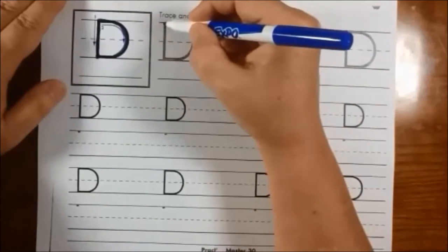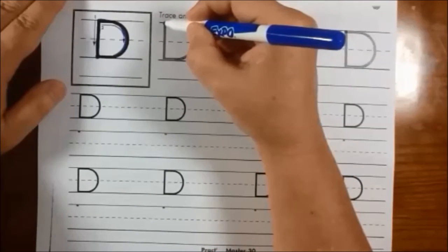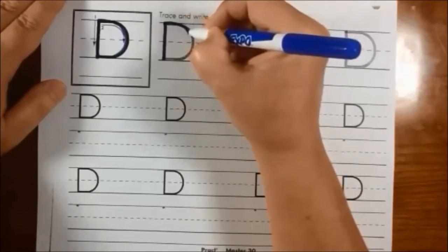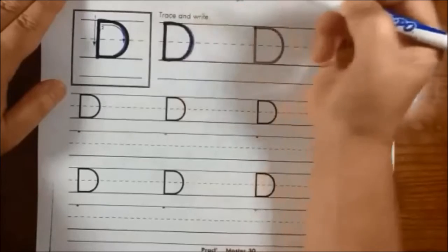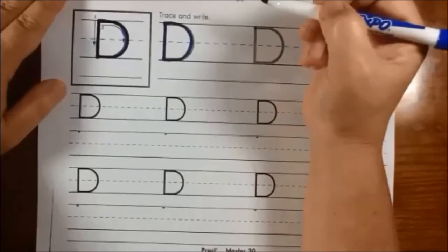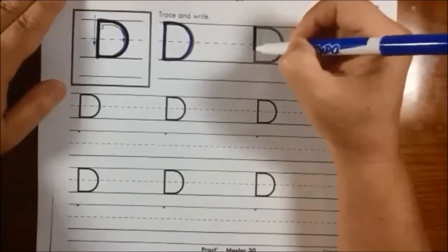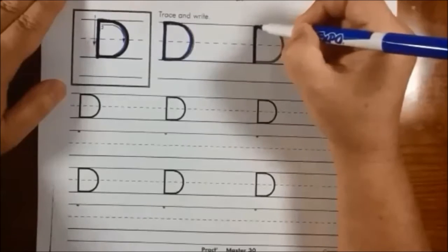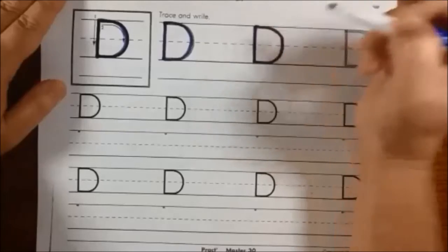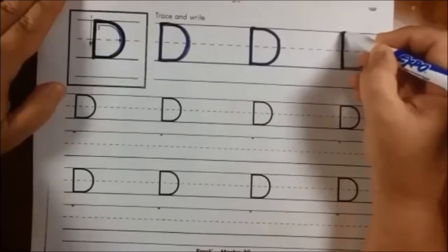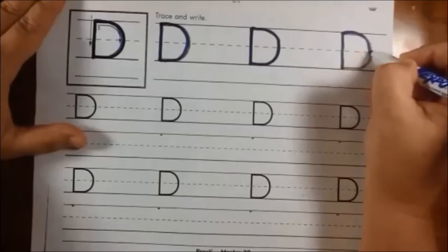Now you could pick up your pencil after you go down and just come back to the top and go around if that is easier for you and if it looks nicer. Whichever way looks the nicest. So down, up, and around. Or down, come to the top, and around.